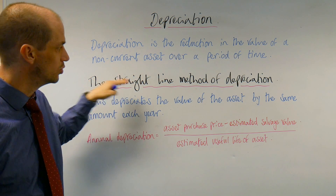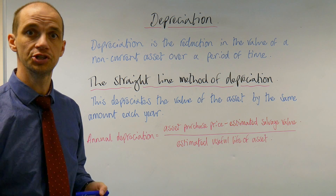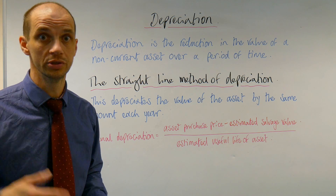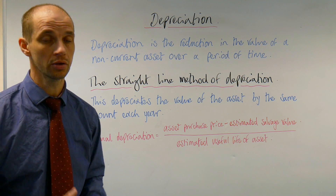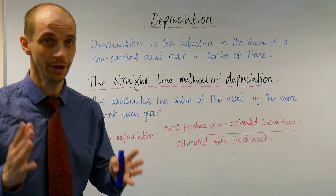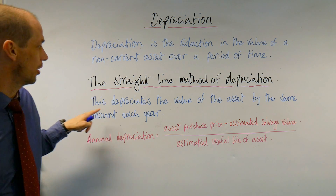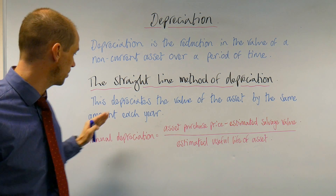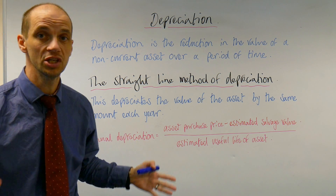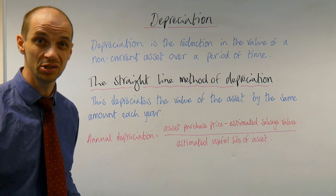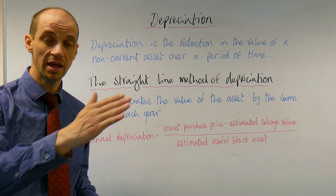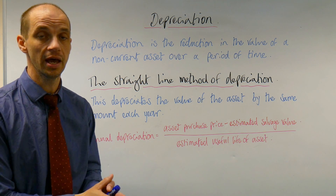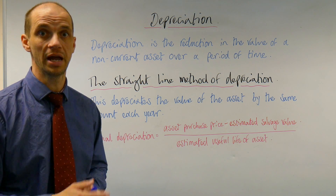So this first method you need to know is the straight line depreciation method. It's actually really quite straightforward to calculate, so there's not going to be any bother here, promise. This depreciates the value of the asset by the same amount each year — that's why it's called the straight line method, because every year it depreciates the value of that asset at the same amount.